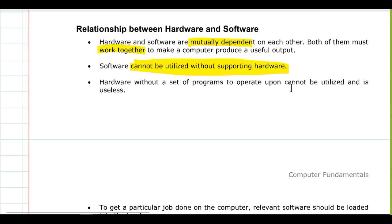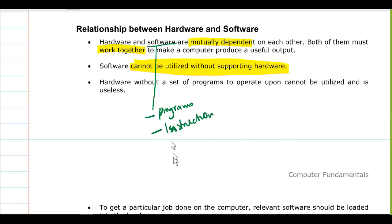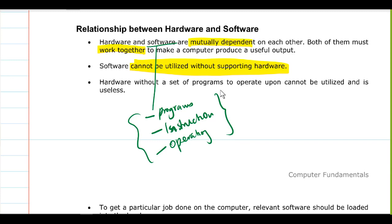Now let's briefly talk about the relationship between hardware and software. Both of them are mutually dependent on each other. Software refers to what you cannot see — these are the programs or instructions that run in a computer. They might be programs, instructions, or an operating system — anything you cannot see, but which tells the hardware what to do. This is what we call software.